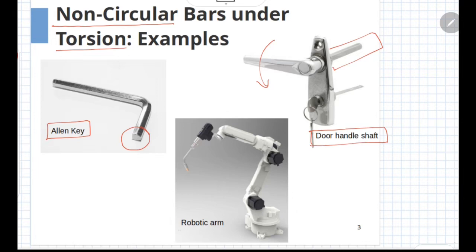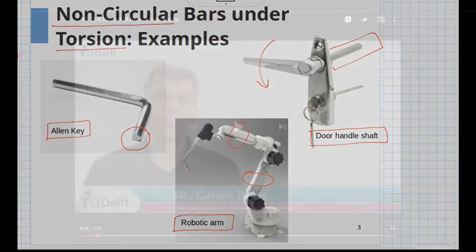The third example is that of a robotic arm. It has got linkages which may be having non-circular cross-section and during operation, these linkages will be subjected to torsion in addition to the other loadings.